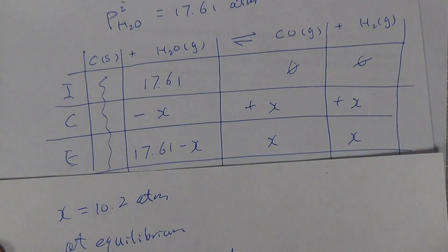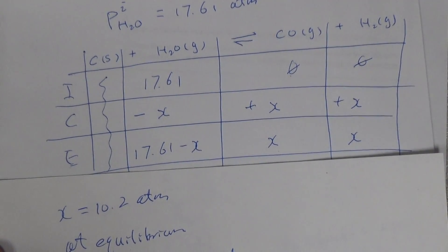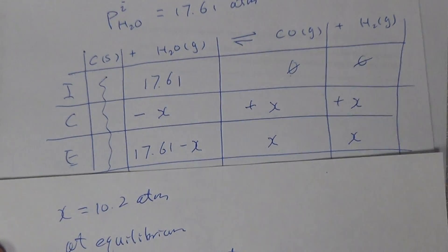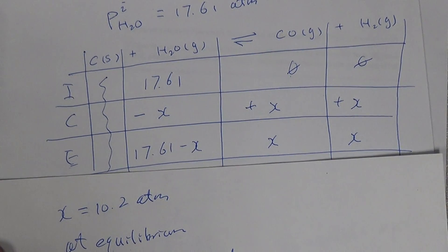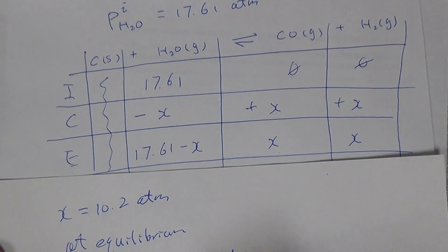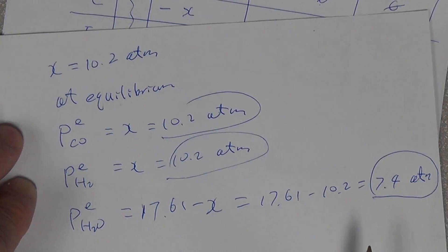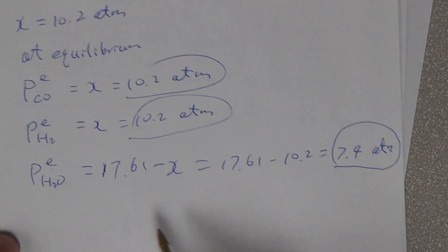And that'll give 7.4 atm. So these are the few numbers, the three numbers we just find out at equilibrium.